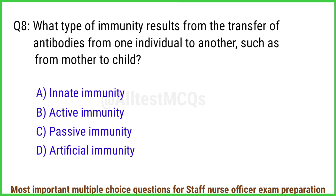Q8. Which type of immunity results from the transfer of antibodies from one individual to another, such as from mother to child? The right answer is option C: Passive immunity.